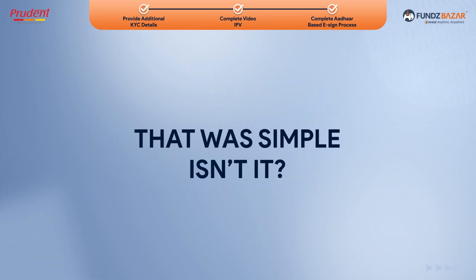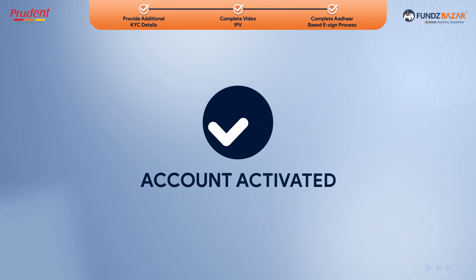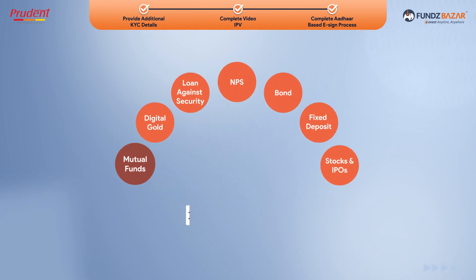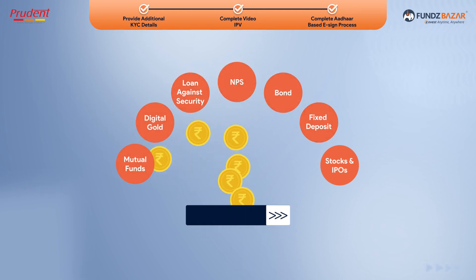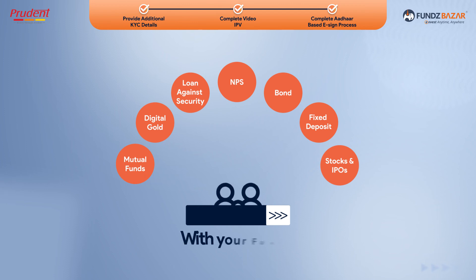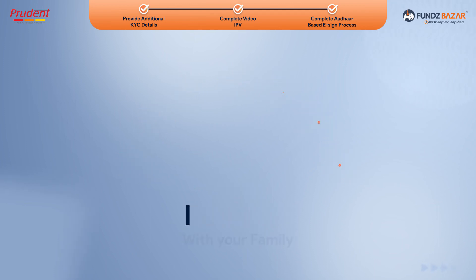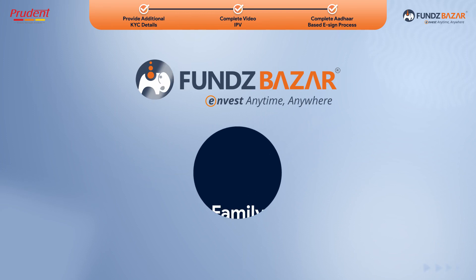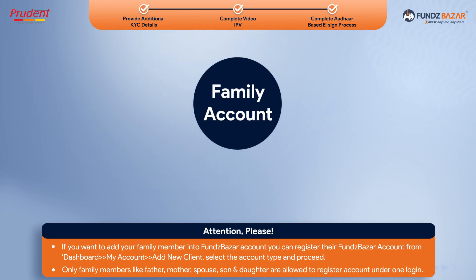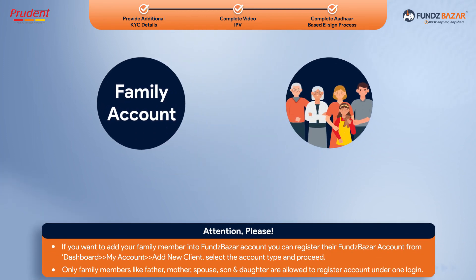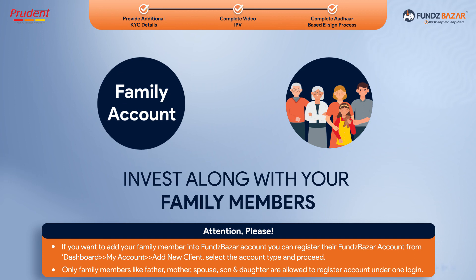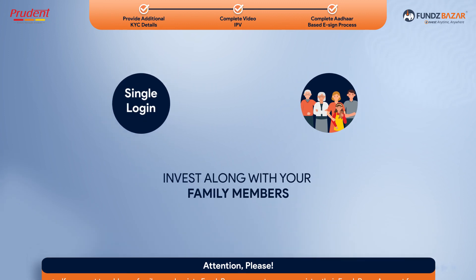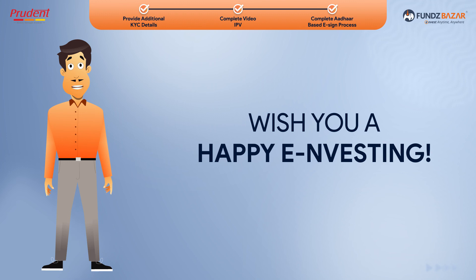That was simple, isn't it? Once your FundsBazaar account gets activated, you can start investing in mutual funds and other products as well as trade in stocks and apply in IPOs, that too with your family. FundsBazaar offers a family account feature that allows you to invest in multiple products along with your family members under a single login. Wish you a happy investing!